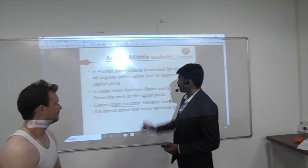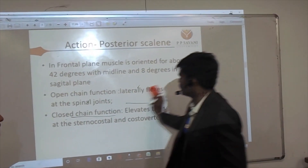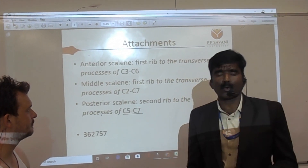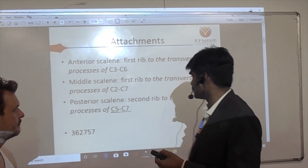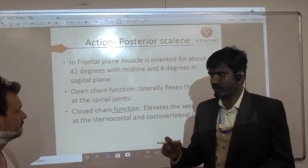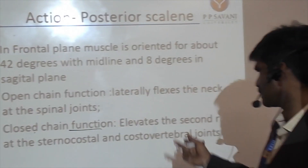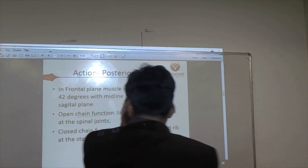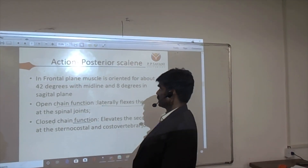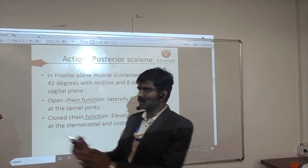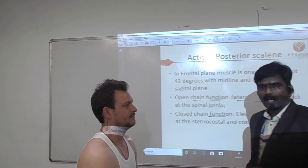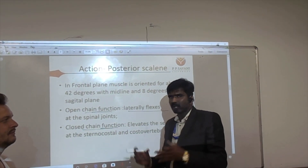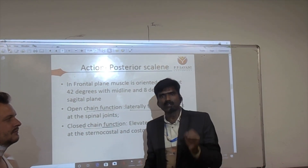The posterior scalene — we already discussed its attachment: proximal attachment is C5 to C7. The function of scalene posterior in open chain is that it has only one function: it elevates the second rib.